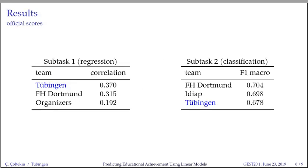Now it's time for the results. This slide shows the top three teams on both subtasks in the official competition. The system described here got first position on subtask 1, and as we will see soon, this result can be improved further. In the OMT classification task, the system got third position, but both of the better systems in that subtask are BERT-based systems using a lot of information that comes with pre-trained BERT models. Considering that the current model doesn't have any additional information at all, the two percent difference between the top models is probably not too bad.